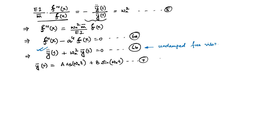In this equation, A and B are constants that we evaluate from the initial conditions, which we will do in a minute. For now we have the expression for the time component of the response. We used separation of variables and have the time component solved — equation 6b is solved. Now let us consider equation 6a.